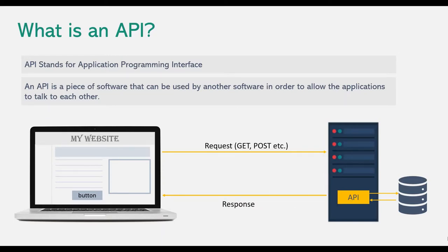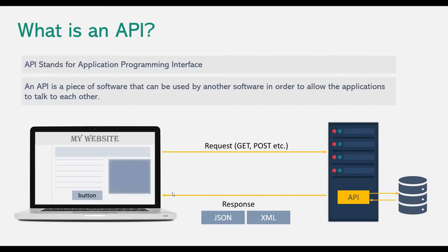Here, the web API is one software and the web application is another software, and these two softwares interact with each other by exchanging data. The data which the web API sends will be in either JSON format or XML format, and you can use that data and display it in your web page. This approach is less cumbersome — all you have to do is send a request to the web API and get the response.